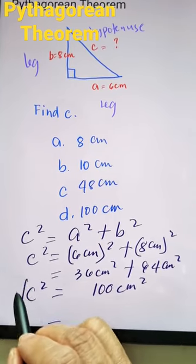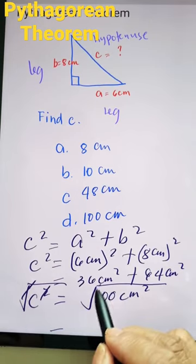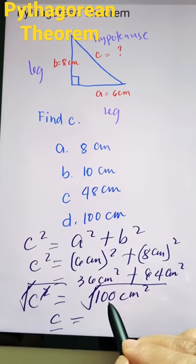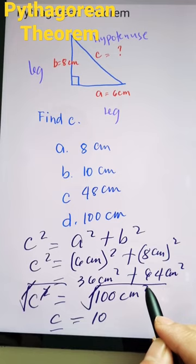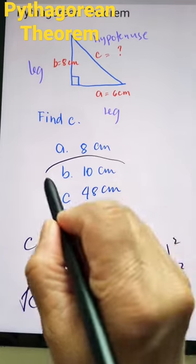In order to solve for the value of c, we need to extract both sides, the square root of both sides. So this is c is equal to square root of 100, that is 10, and then centimeters. So 10 centimeters is letter b.